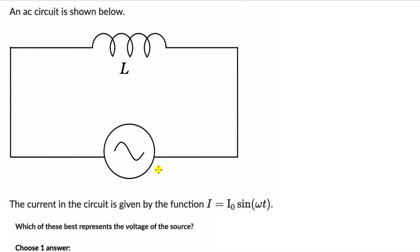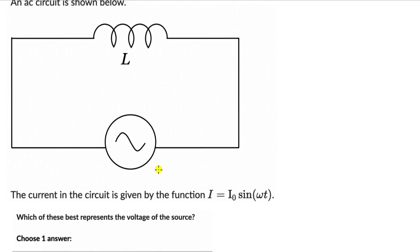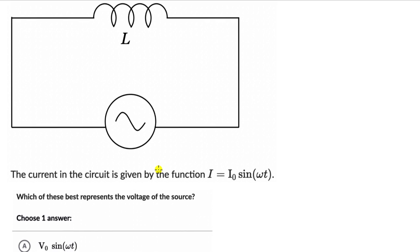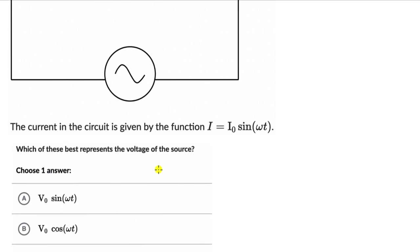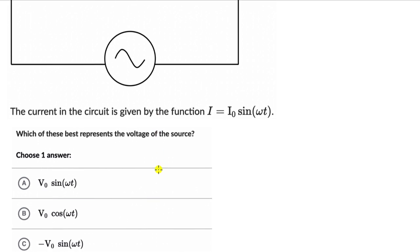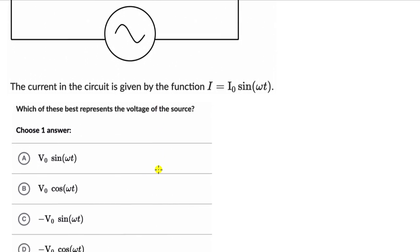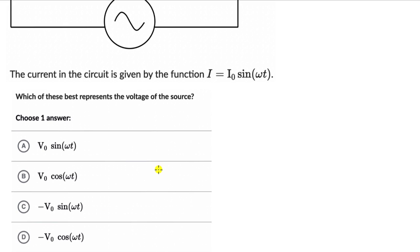The options are V₀sin(ωt), V₀cos(ωt), and options C and D. Before I jump into this, why don't you pause the video and first attempt this one on your own.